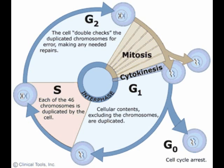Following G1, the cell enters the S stage, when DNA synthesis or replication occurs. At the beginning of the S stage, each chromosome is composed of one DNA double helix. Following DNA replication, each chromosome is composed of two identical DNA double helix molecules. Each double helix is called a chromatid. Another way of expressing these events is to say that DNA replication has resulted in duplicated chromosomes.